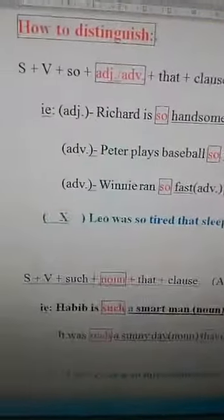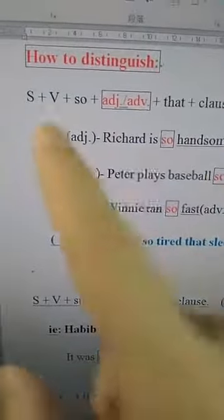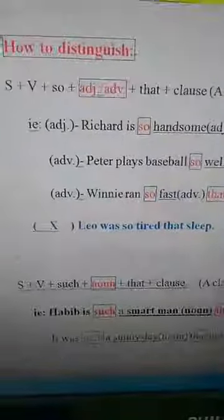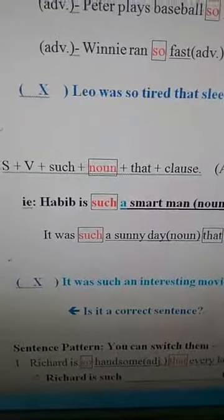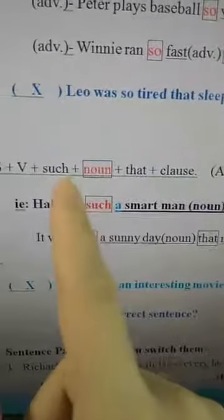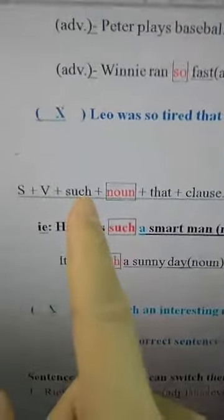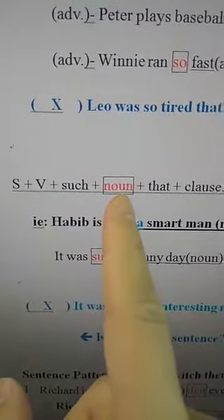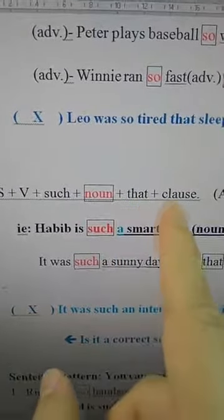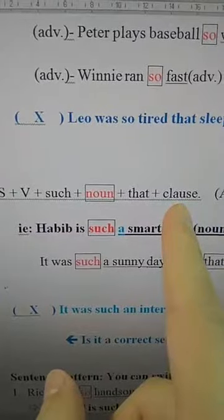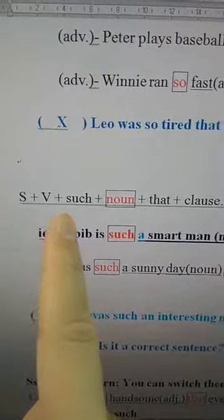We just talked about 'so that.' Now let's talk about how to distinguish 'such that.' We use 'so' plus adjective or adverb, and right now we use 'such' for a noun. Subject + verb + 'such that,' and you should always follow with a noun after 'such.' Then 'that' + one clause.